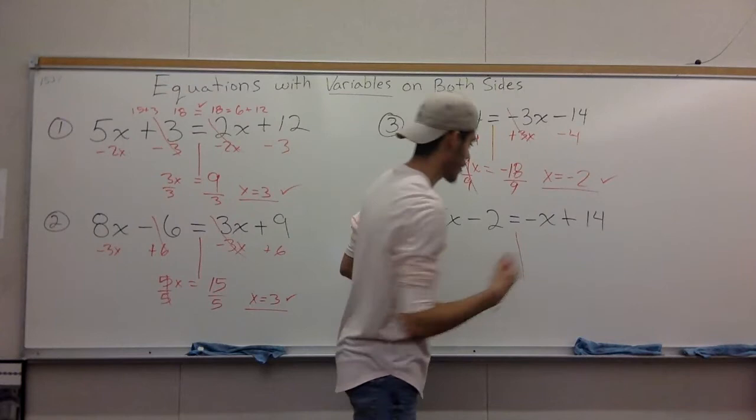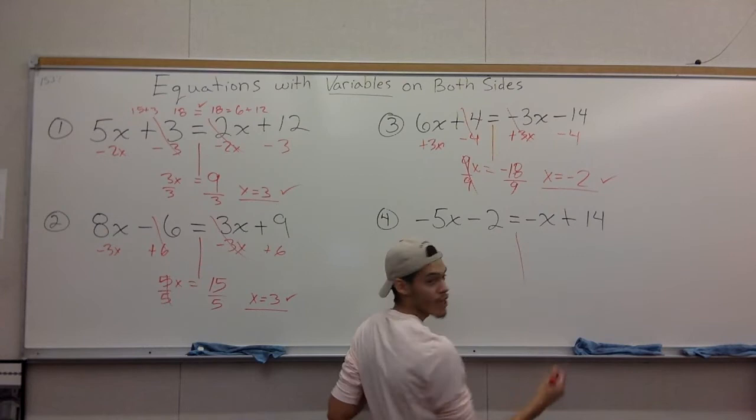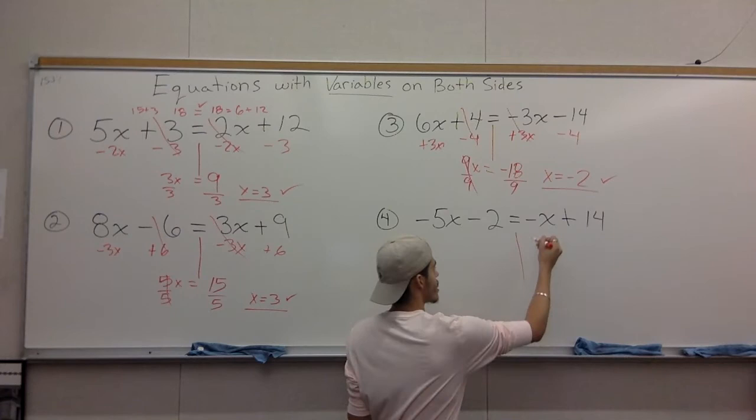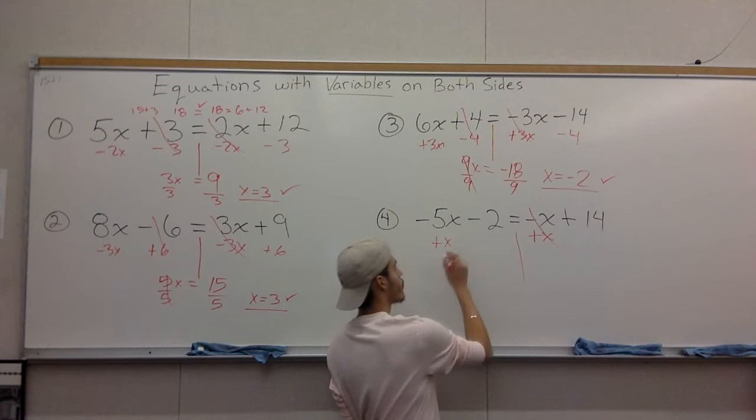All right. For the last problem, many more negatives thrown into the mix, but simple as that, we're going to continue doing simple adding and subtracting. So we have negative x, we do the opposite of negative, or subtraction, which is addition. Add x to one side, cross it off, we don't need it. Add x to the other side.